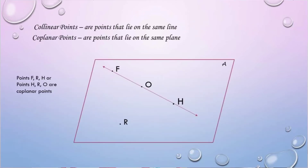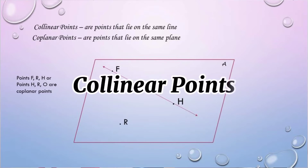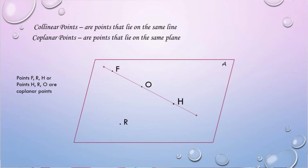Let's start with collinear points and coplanar points. What is the difference between these two? Collinear points are points that lie on the same line. As you can see in the figure, point F, point O, and point H lie on the same line. Therefore, they are collinear points.